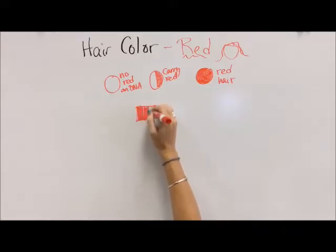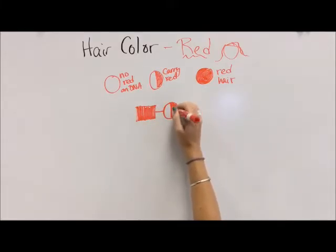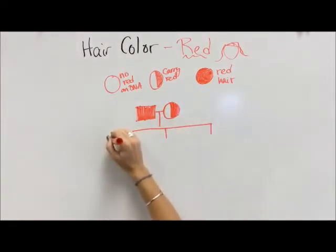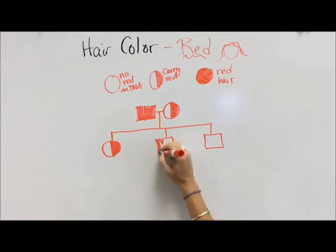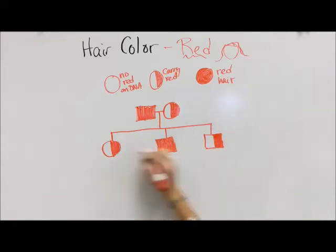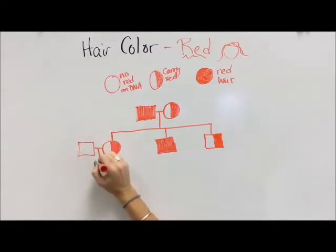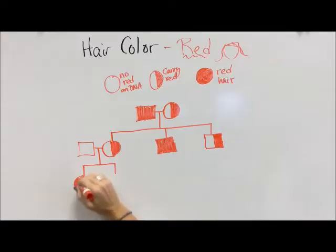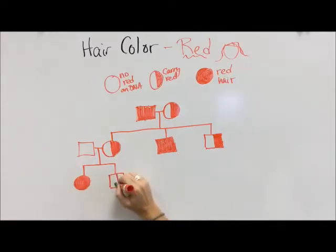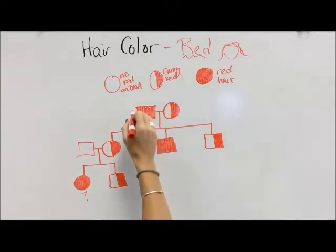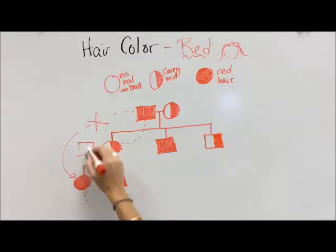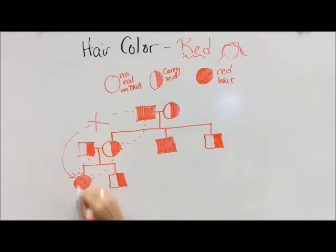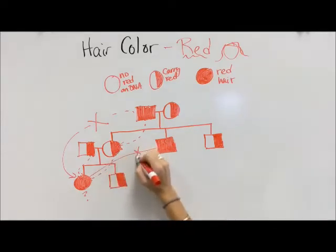Let's say we have a red-headed grandpa who has children with a grandma who doesn't know she carries red on her DNA. They have three children: the oldest daughter has no red hair, the middle son has bright red hair, and the youngest son is a carrier. Notice everyone in their family has at least one red allele because that's all grandpa has to give. The oldest daughter has children with a male, and their firstborn daughter has bright red hair while their son does not. Grandpa gave red to mom, mom gave red to her daughter — and dad was a carrier and didn't know it, so he gave the other red allele.